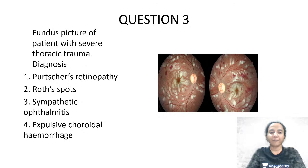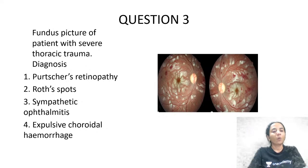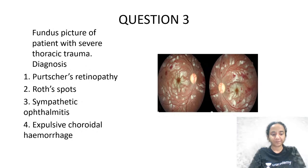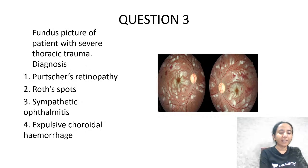Now, this is the fundus picture of a patient who presented with severe thoracic trauma. Is it Purtscher's retinopathy, Roth spot, sympathetic ophthalmia, or expulsive choroidal hemorrhage? This is a very typical image-based question. This is typically what we call Purtscher's retinopathy.